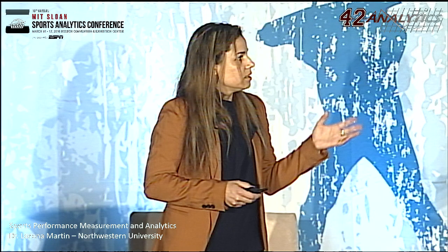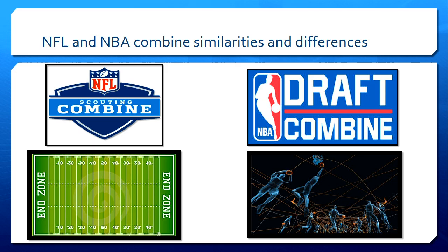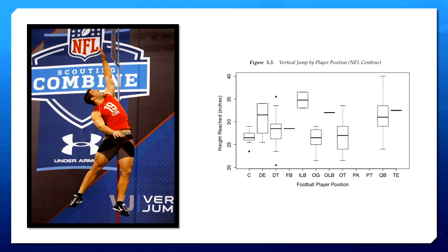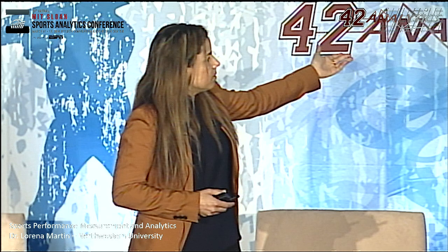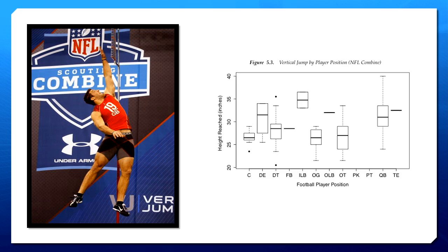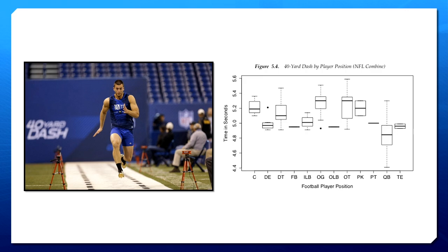I'm going to take a quick look at the differences and similarities between the NBA draft combine and the NFL combine — some of this is taken from my book. One similarity is that they both assess athletes in the vertical jump, although the NBA calls it the max vertical leap and also has the standing leap. In the NFL, looking at the positions listed, the quarterback reaches quite high compared to maybe a defensive tackle or a center. These differences can be examined with a simple ANOVA and some R code using publicly available data.